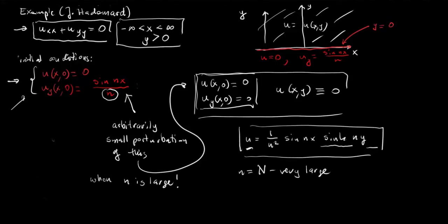Now we perturb these initial conditions very slightly if we choose n to be very large. But the solution obtained for this very slight perturbation of the trivial boundary conditions for the trivial solution gives a solution which can be arbitrarily large far away from x-axis.